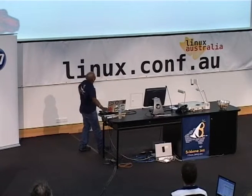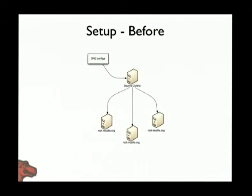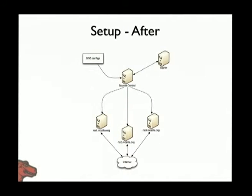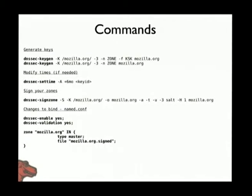Quickly running through our setup — very simple. We've got DNS configs sitting in source control, pushed out to the name servers. We don't change much because we're lazy sysadmins. We put up a signer box that's pretty secure. The signer box pulls from source control and pushes back the signed configs. A couple of commands: dnssec-keygen and dnssec-signzone.